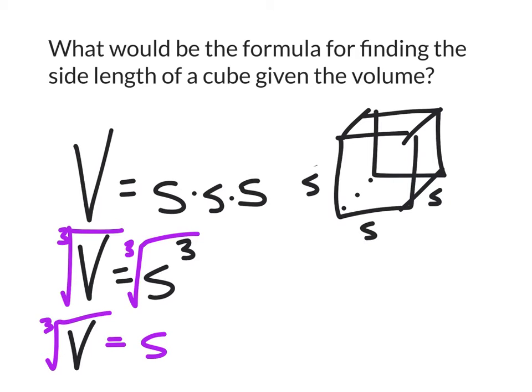So let me give you a quick example right here. So if I told you the volume of a cube was 125 cubic meters, then if you wanted to find the side length, you would take that same 125 cubic meters.